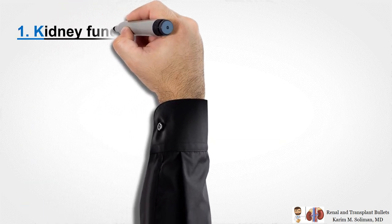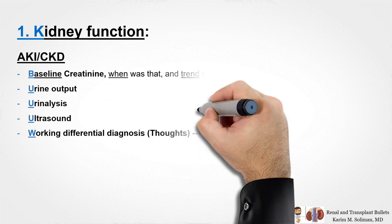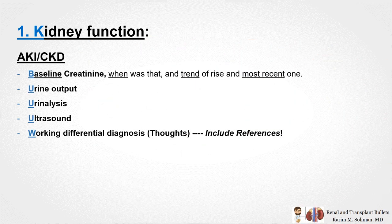Starting with number one, kidney function. If this is an AKI or CKD case, mention the last known baseline creatinine and when that was, then the trend and the most recent value. Comment on the urine output, urine analysis, and renal ultrasound — this is the foundation of any kidney problem. Then put your differential diagnosis and document your way of thinking to benefit the primary team and the patient, and also to justify your billing. Remember, you get paid for what you think and your plan of management — in other words, address the team's concerns.